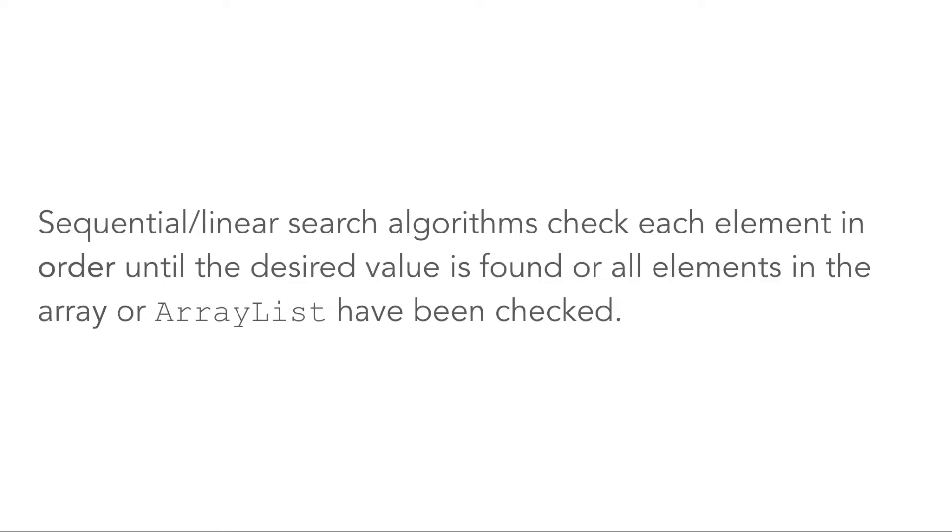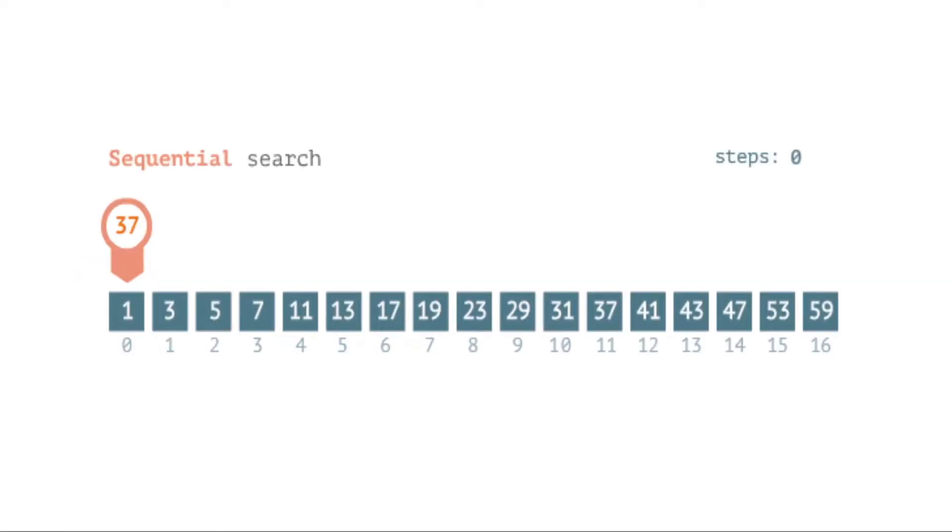Sequential or linear search algorithms check each element in order until the desired value is found, or all the elements in the array or array list have been checked. Here is a visualization of a linear or sequential search that is looking for the target value of 37.